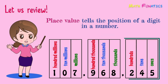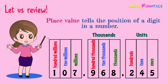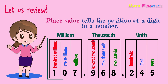The first period is called the units period. The second is the thousands period, and the third is the millions period. Billions is the next period after millions.